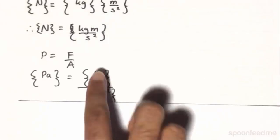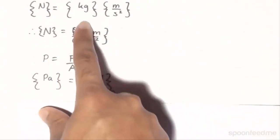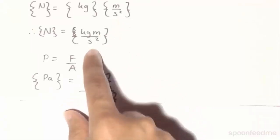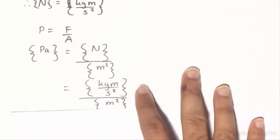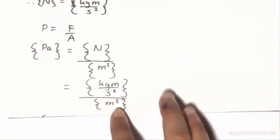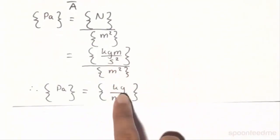Since we found newtons to be equal to kilogram meters per second squared here, what a pascal will equal to is kilogram meters per second squared all over the meter squared, which will simplify to kilograms per meter second squared.